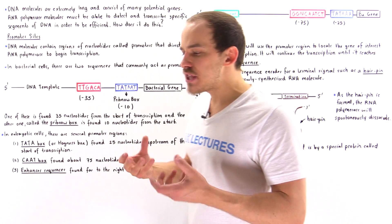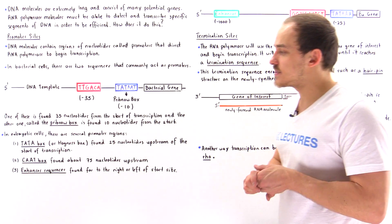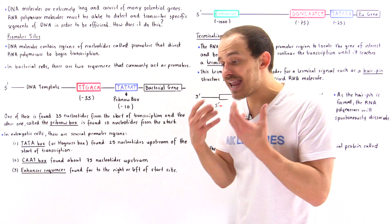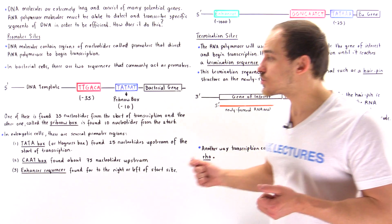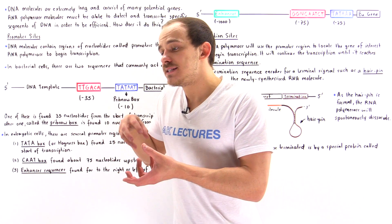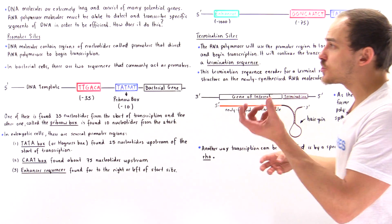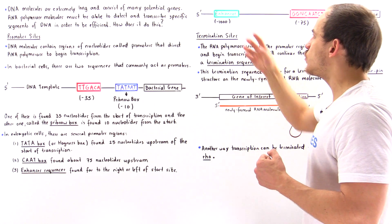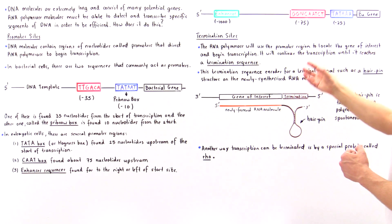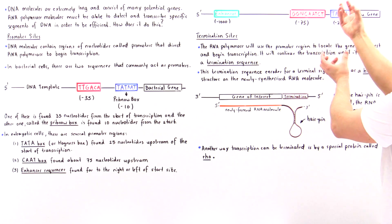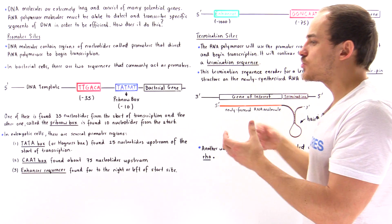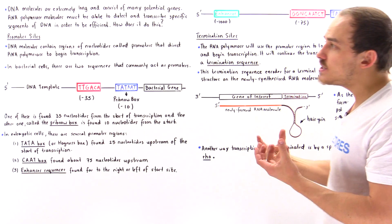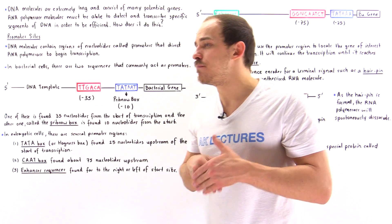Something not found in prokaryotic cells is the enhancer sequence. The enhancer sequence is not actually a promoter sequence, but it is a sequence onto which a special protein can bind. Once that protein binds onto the enhancer sequence, it moves to the promoter region, forms a complex, and essentially promotes transcription — increasing the efficiency of the RNA polymerase molecule.